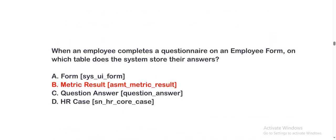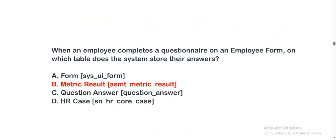Next question: When an employee completes a questionnaire on an employee form, on which table does the system store their answers? Option A, form; option B, metric result; option C, question answer; option D, HR case. The correct option is option B.